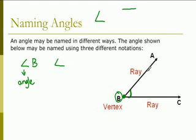You can also name it by using the three letters. So when you are naming angles, the vertex always must be in the middle. So we can name it ABC, angle ABC.